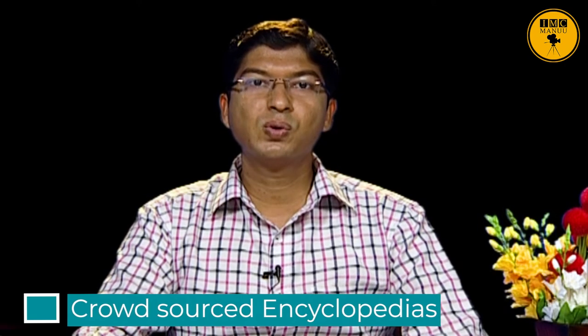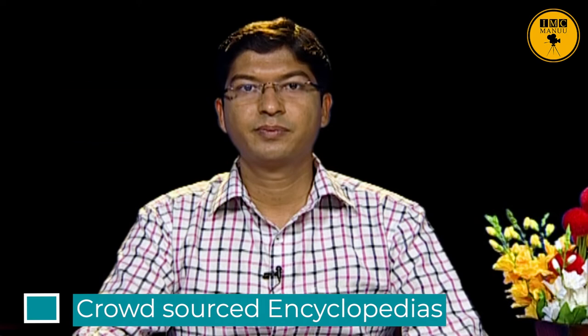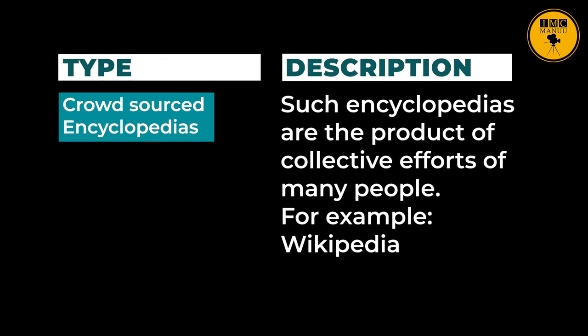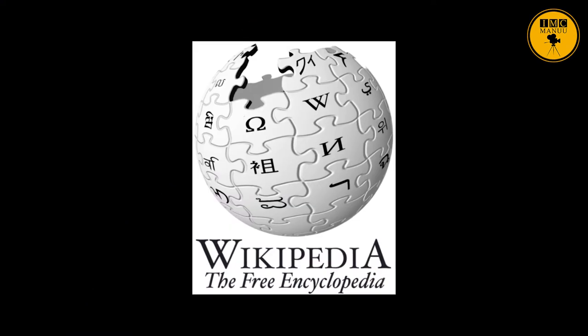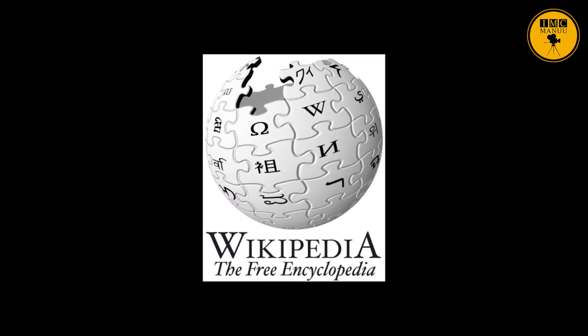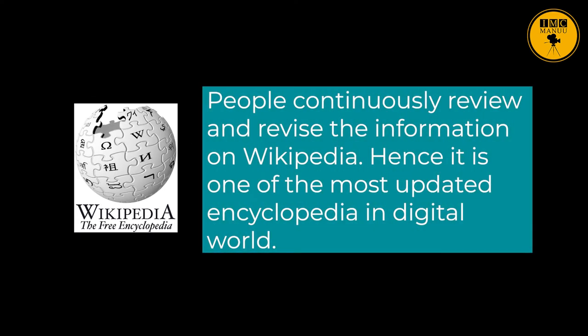The fourth type of encyclopedia is crowd-sourced encyclopedias — the product of collective efforts of many people. For example, Wikipedia, the free encyclopedia. People continuously review and revise the information on Wikipedia; hence, it is one of the most updated encyclopedias in this digital world.